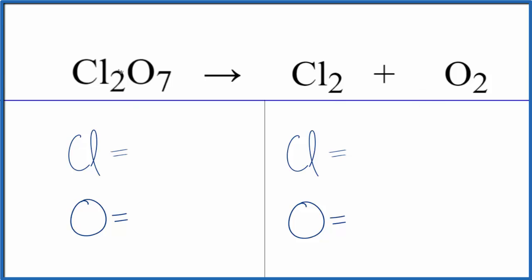So to balance the equation, we have two chlorine atoms, seven oxygen atoms. Over here we have two chlorines and only two oxygen atoms.